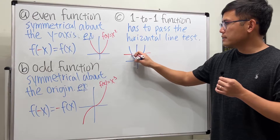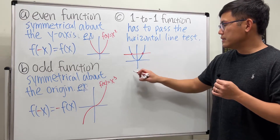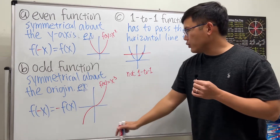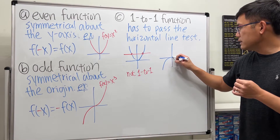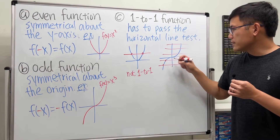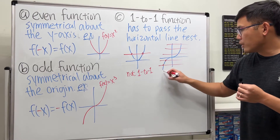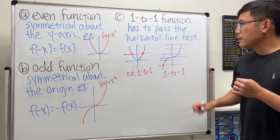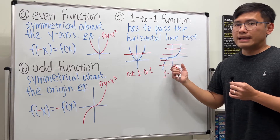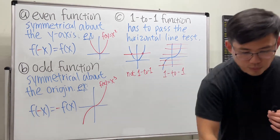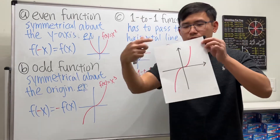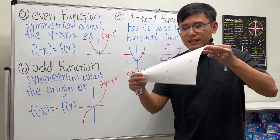When we have x², it does not pass the horizontal line test because a horizontal line crosses the graph more than once — so this is not one-to-one. But if you look at x³, the graph is such that no matter which horizontal line you draw, it only crosses the curve at most one time, so this is one-to-one.